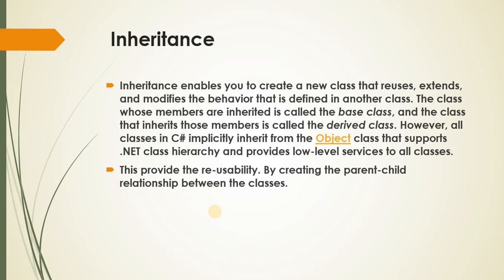The next concept is inheritance. Inheritance enables you to create a new class that reuses, extends and modifies the behavior defined in another class. The class whose members are inherited is called the base class, and the class that inherits those members is called the derived class. The base class is nothing but our parent class, and the derived class is our child class. All classes in C Sharp implicitly inherit from the object class — object is the base class for all classes. The object class supports the .NET class hierarchy and provides low-level services to the classes. This provides reusability by creating a parent-child relationship between classes.